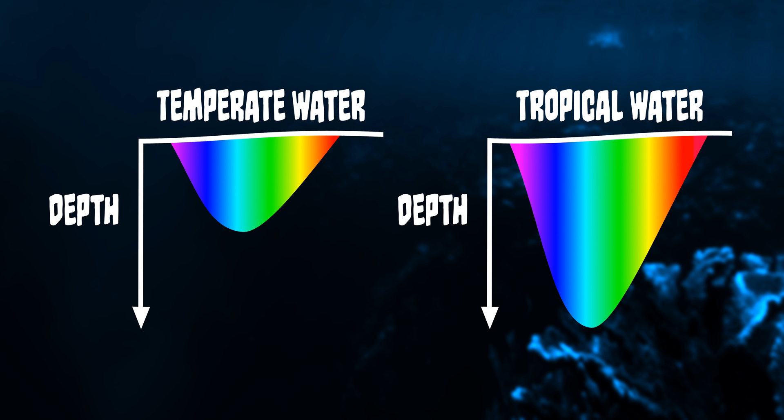Therefore, tropical waters are a lot bluer because there's more light. Tropical waters are also a lot shallower, so the light travels all the way to the bottom and reflects off the really white-colored sand. So light traveling through the water not only explains why the ocean is blue, but why different parts of the ocean appear to be different shades of blue.